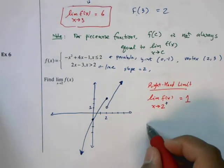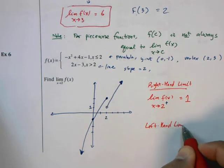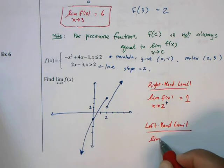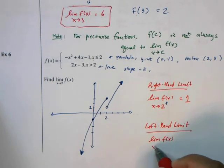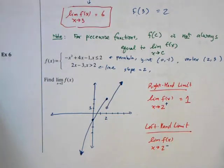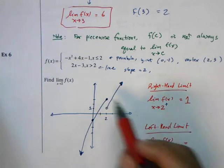Now let's look at the left-hand limit. The limit of f(x) as x approaches 2 from the left is equal to 3.